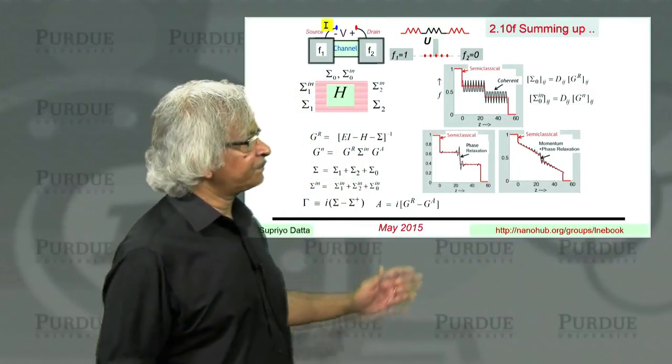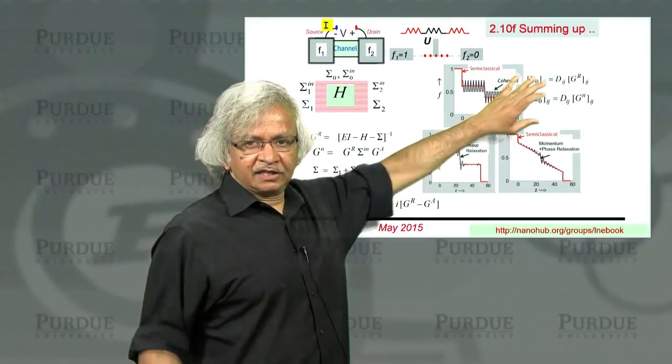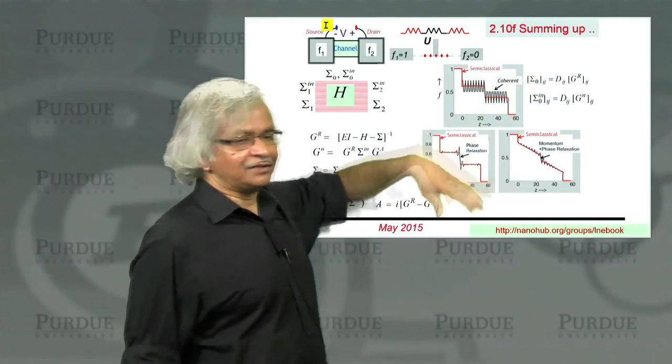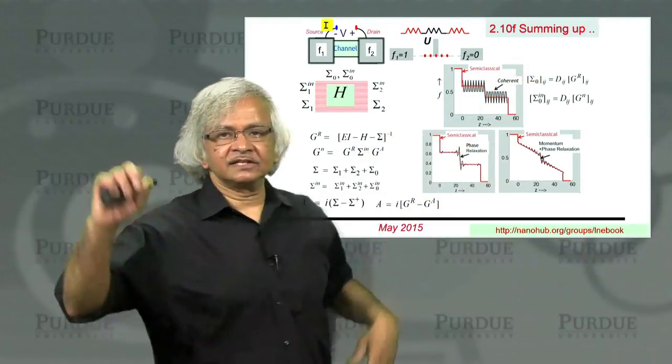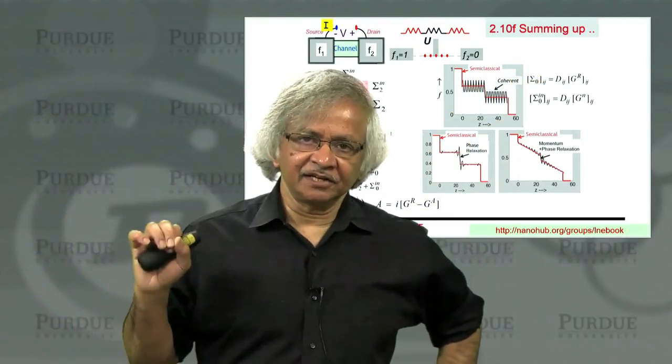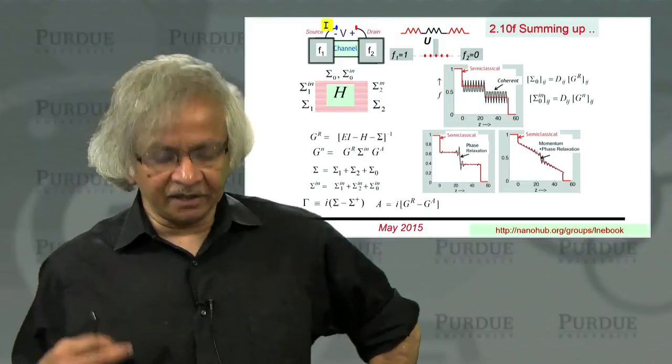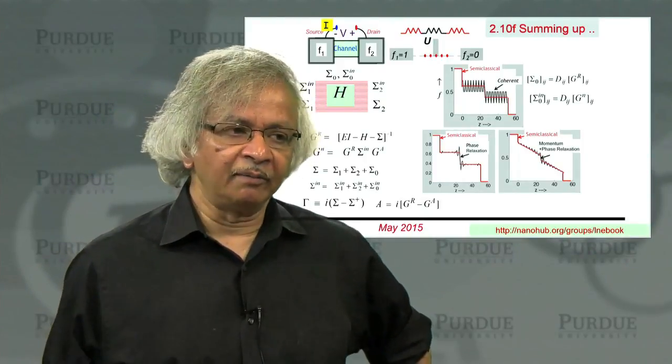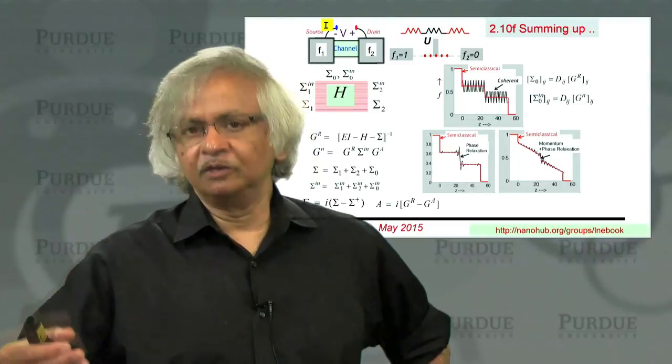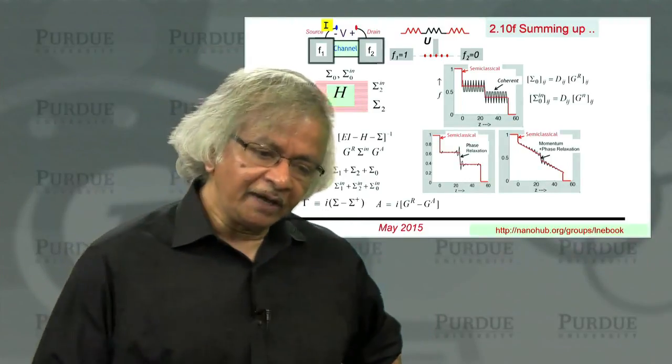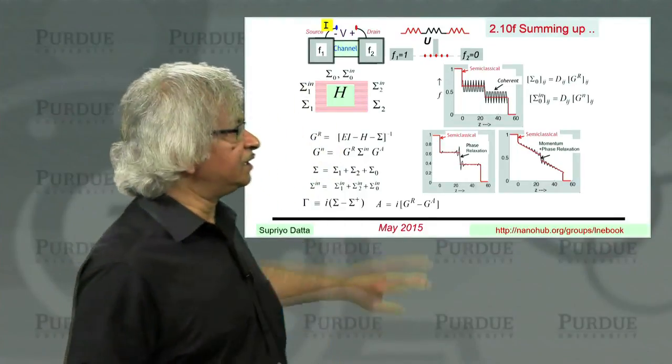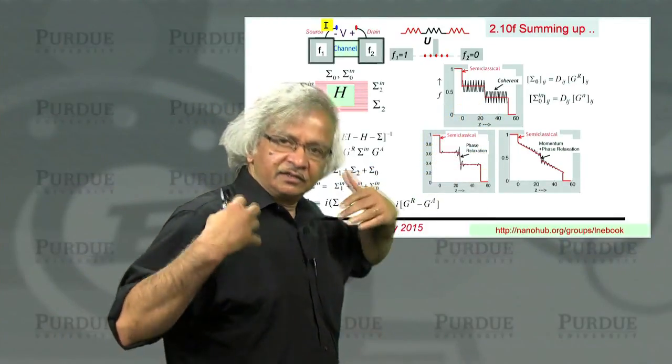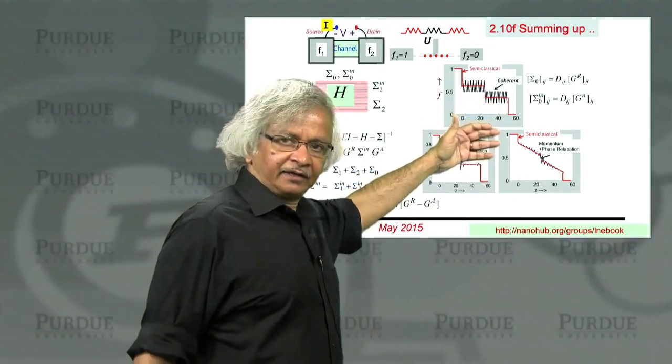But the approach we are taking is we are not obtaining the D from microscopic theory. Instead we are saying let us use a D that gives us a consistent model. But then we choose the D so it gives us the correct relaxation processes. In a given system you usually know what kind of momentum relaxation time there is from mobility. Or you might know what the phase relaxation times are. And so you choose the D accordingly.